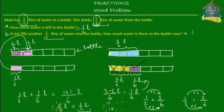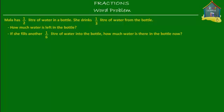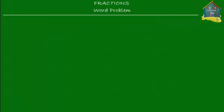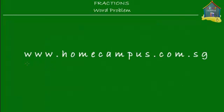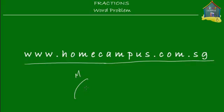After filling another one sixth of a liter, the amount of water in the bottle is two sixths of a liter, which simplified is equal to one third of a liter. That's the answer to question B. That brings us to the end of this word problem, which I hope you understood. Go and solve some other word problems at www.homecampus.com.sg — practice makes perfect.